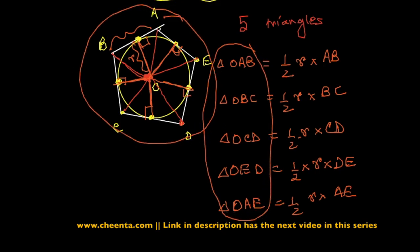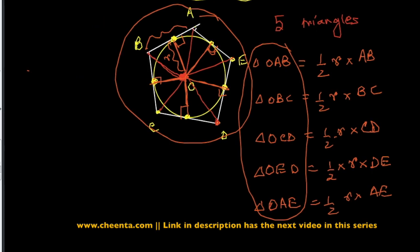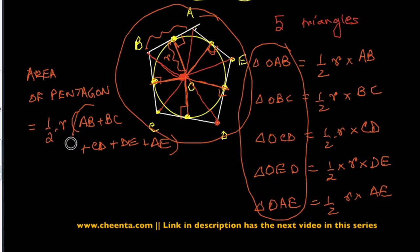Now if you add the areas of all of these triangles, you will get the area of this pentagon. The area of the pentagon is the sum of the areas of all of these triangles, and that's equal to half times R times AB plus BC plus CD plus DE plus AE. But this is precisely the perimeter of the pentagon. Half of that, half times the perimeter, is the semi-perimeter, so this is R times S.